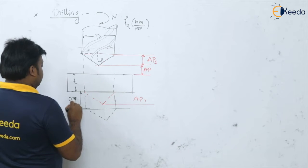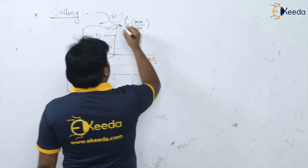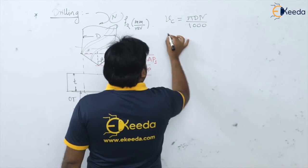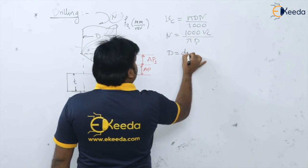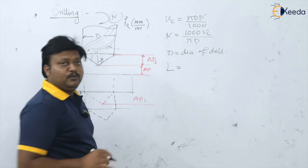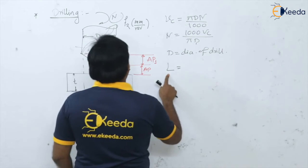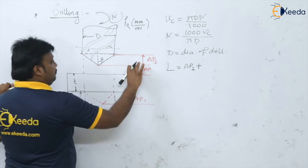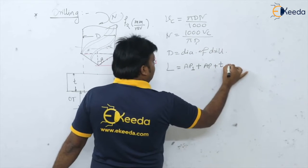N is the RPM of the drill. To get the value of N from cutting speed: the formula is V_c = (pi × D × N) / 1000, so N = (1000 × V_c) / (pi × D), where D is the diameter of the drill. The total length L required — since the formula for time is L / (F × N) — is: L = ap1 (compulsory approach) + ap (if given) + t (thickness of plate) + over travel (if given).